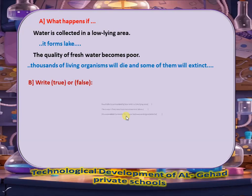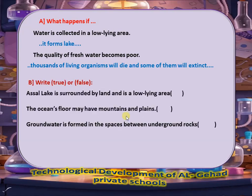True or false? 1. A lake is surrounded by land and is in a low-lying area — True. 2. The ocean's floor may have mountains and plains — True. 3. Ground water is formed in the spaces between underground rocks — True.